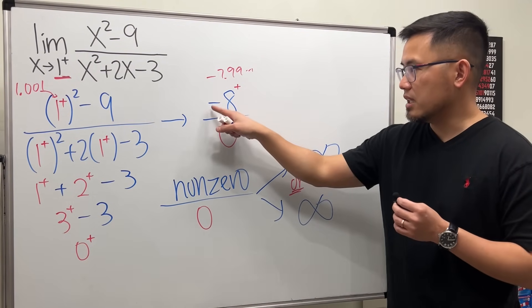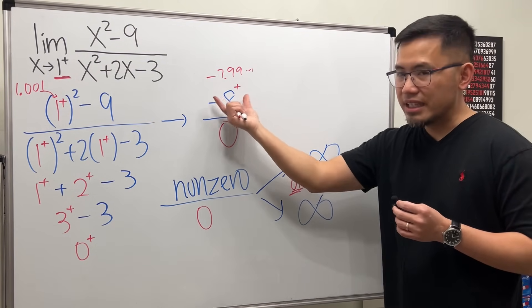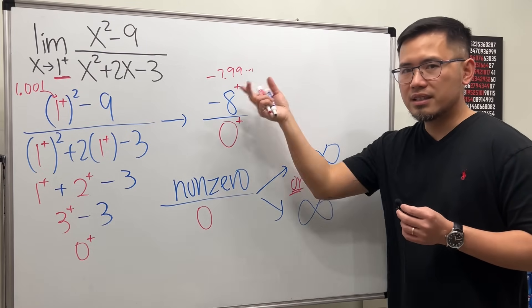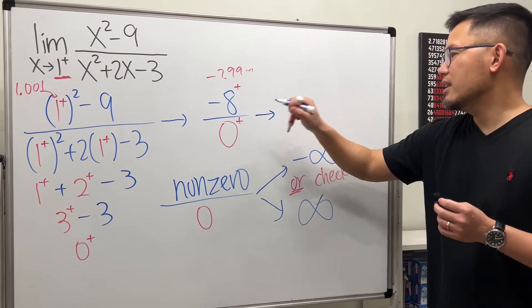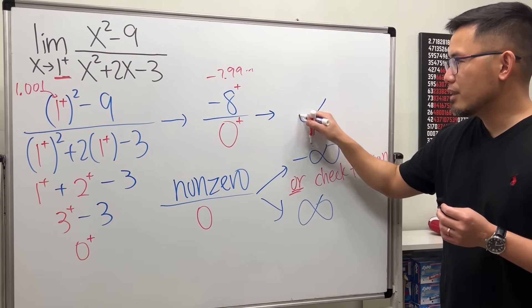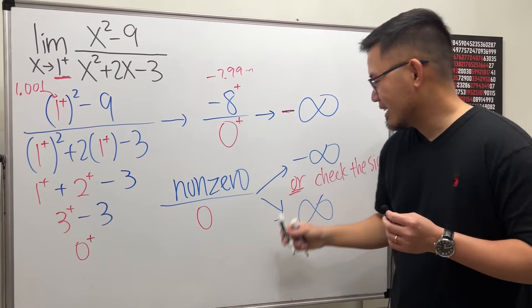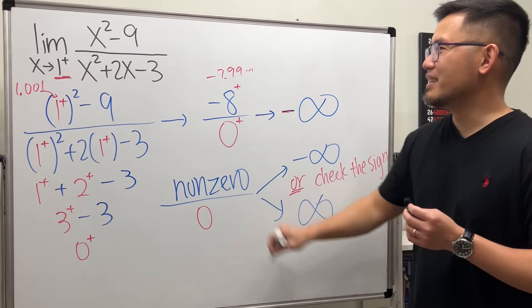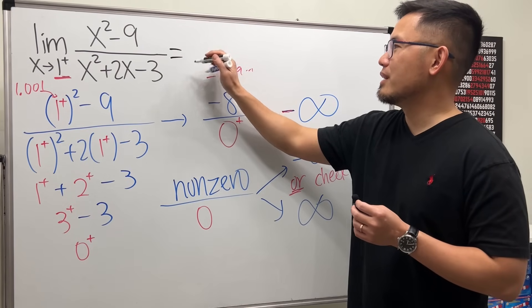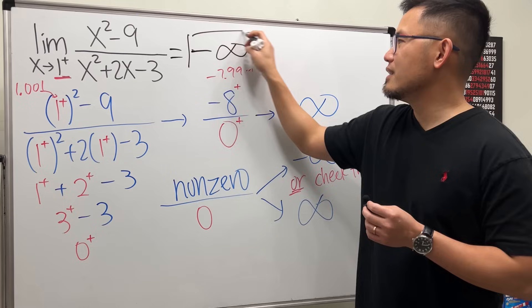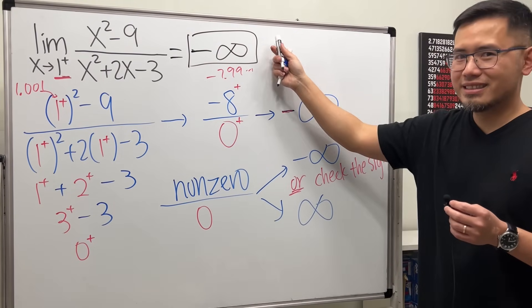Now the top is negative, this is negative, divided by this is a positive. Negative divided by positive, we can say the result is negative infinity. So the answer to this right here is negative infinity. That's it.